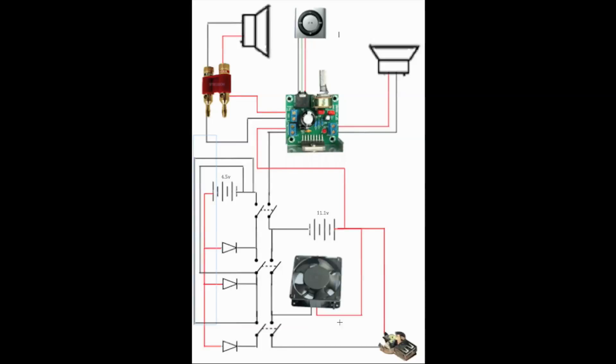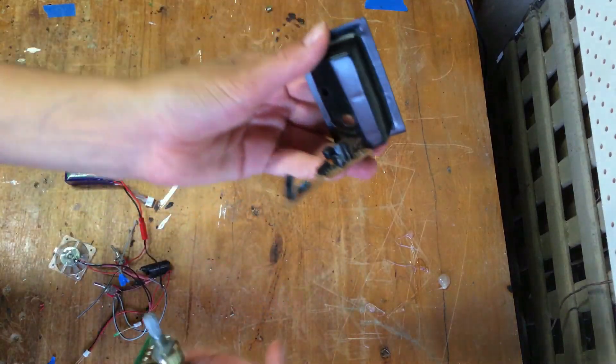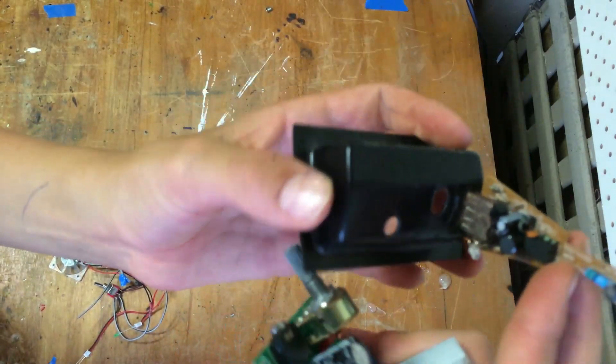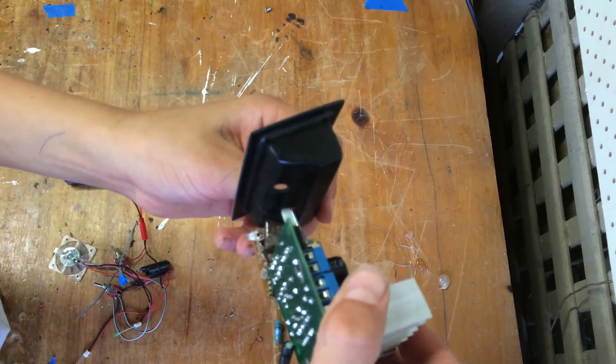So go ahead and drill two holes here with the amplifier and cut a hole into the plastic for the USB charger, and it should fit in like this.